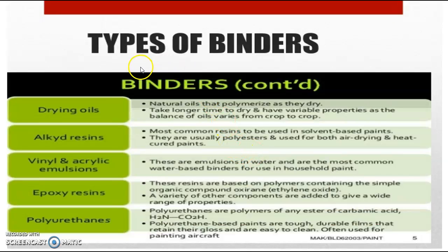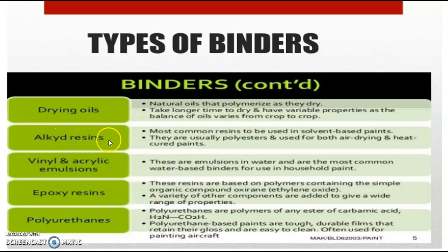Next, we have types of binders. First, drying oils — natural oils that polymerize as they dry. They take a longer time to dry and have variable properties; the properties vary from one crop to another. Next is alkyd resins, the most common resins used in solvent-based paints. They are usually polyesters and used for both air drying and heat-cured paints.